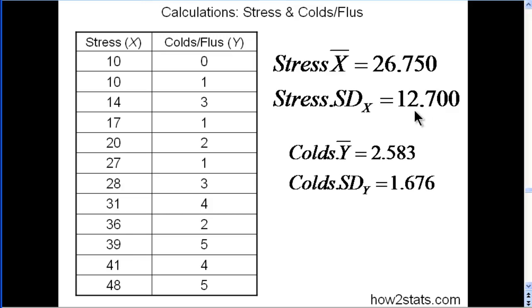Now for colds, flus, the y variable, we have a mean of 2.583. So on average, over the course of a year, people experience 2.6 rounded colds, and the standard deviation is 1.676.